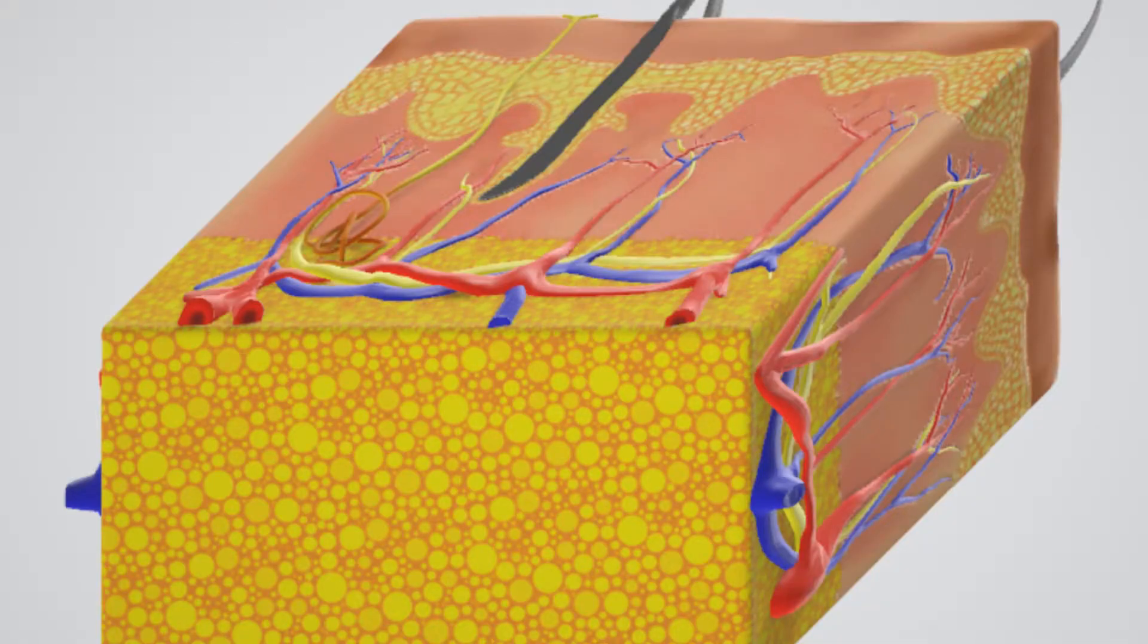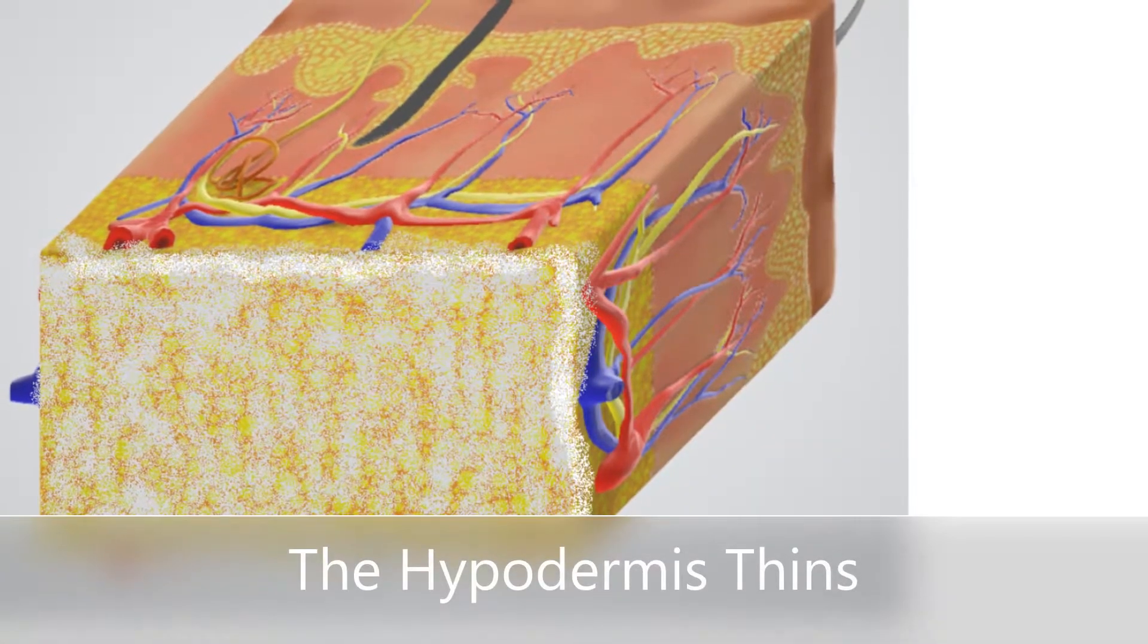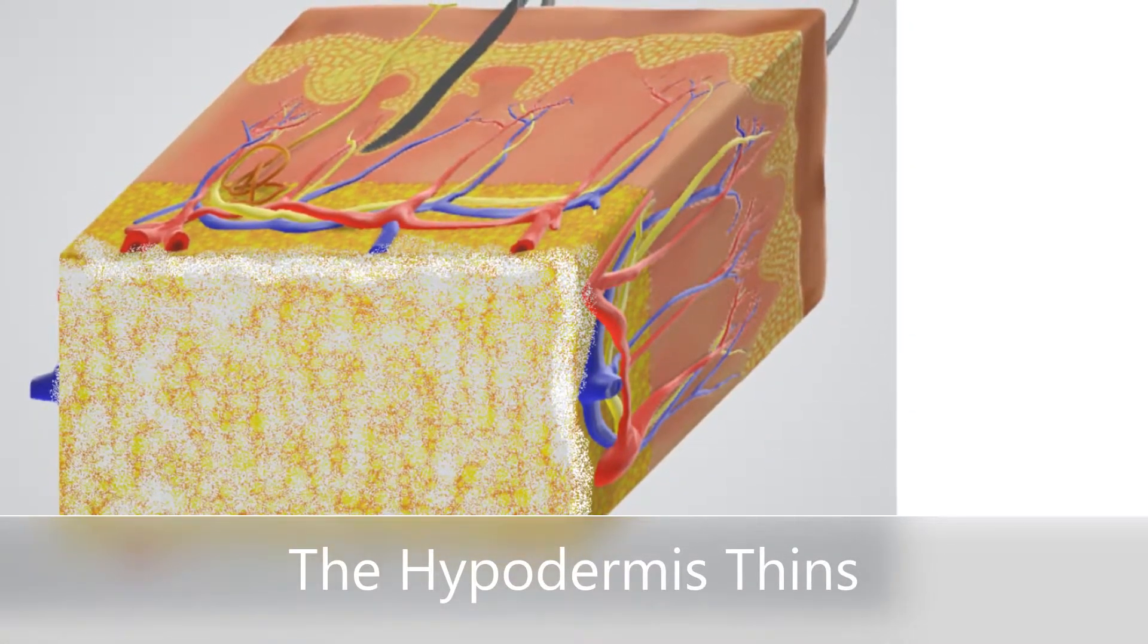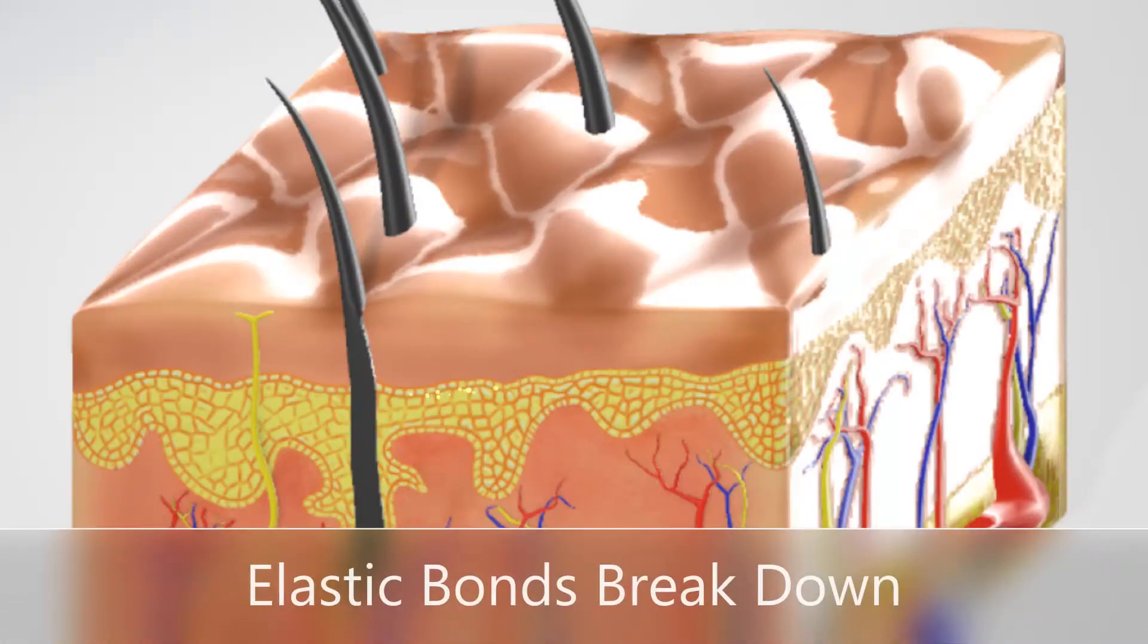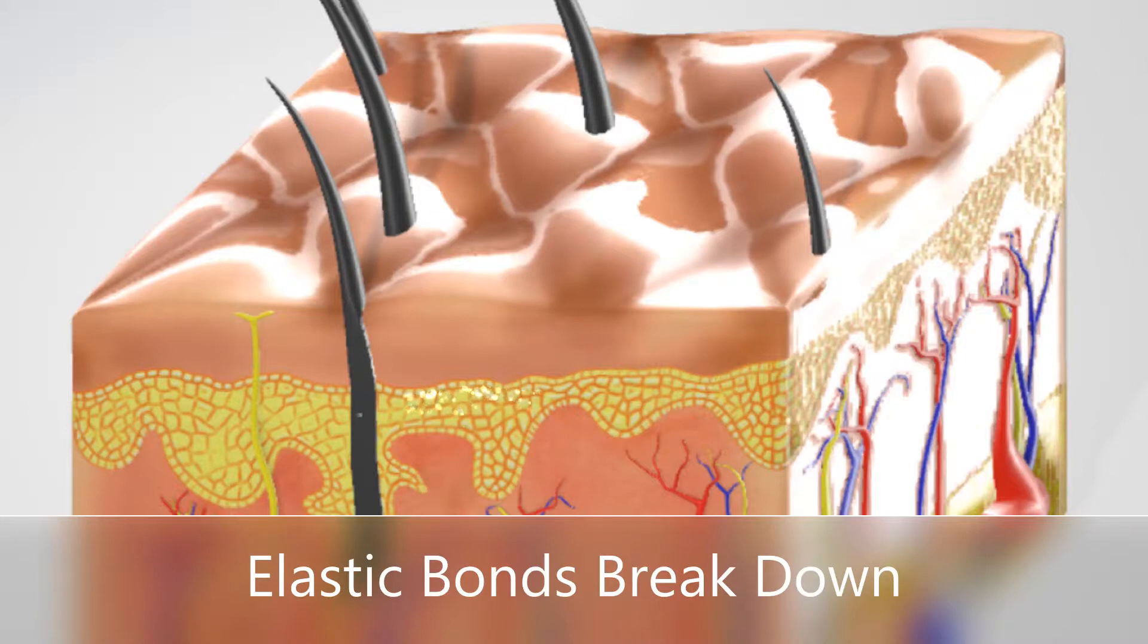There's also less fat in the deeper layers of your skin as you age. This causes skin to sag. The elastic tissue network begins to break down. As a result, your skin becomes looser and excessive.